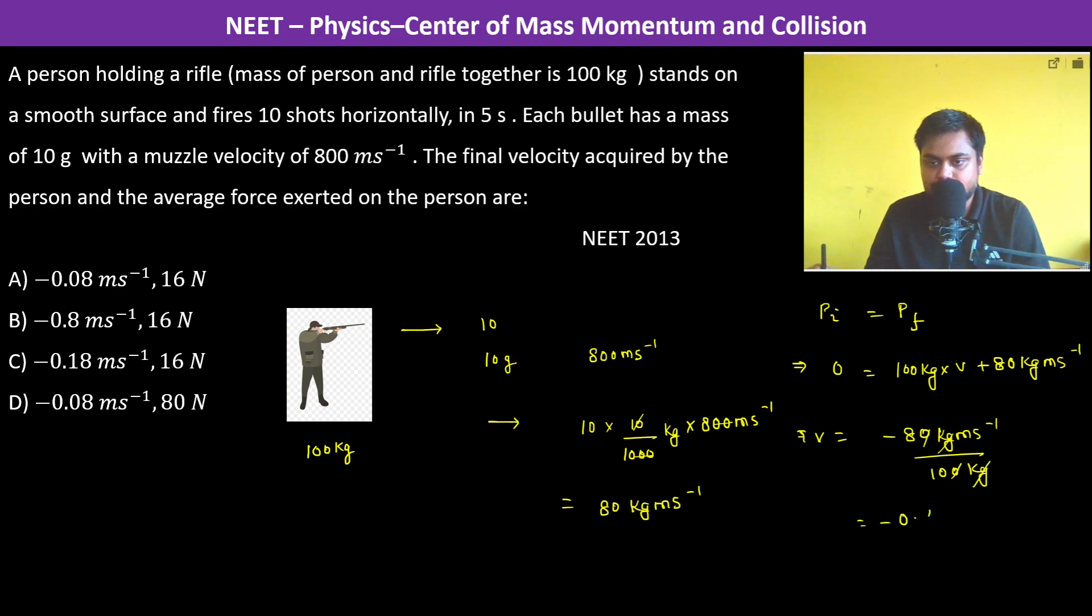This is minus 0.8 meter per second. So therefore B is going to be the answer, minus 0.8 meter per second. And the average force exerted on the person - average force is going to be delta P, the change in momentum, divided by delta time.